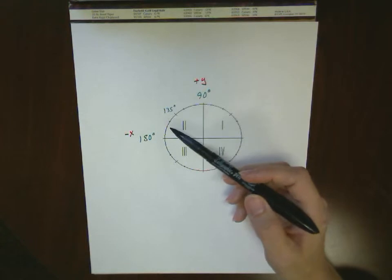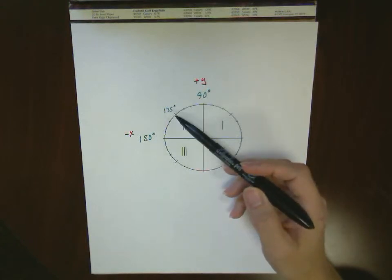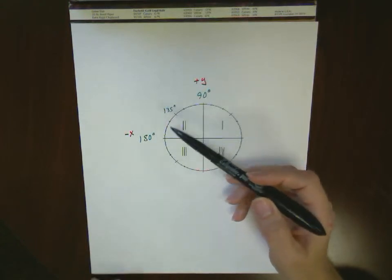And if we look at the midpoint between those two, between 90 and 180, that's going to be 135 degrees. We'll take a look at that a little bit later.